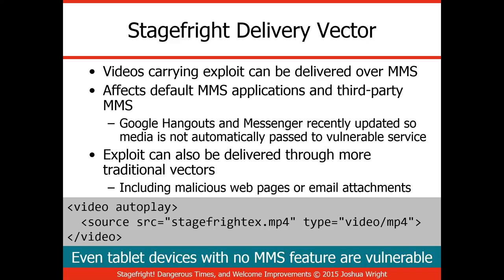Google has released new versions of Hangouts and Google Messenger, updated so they do not process media files automatically. So there is a step between receiving a malicious MP4 file and opening it where an end user with some training can say, 'I'm not going to open this message,' and it won't trigger the vulnerability. That's tremendous — it's not a fix, but it's tremendously good. However, Stage Fright can also be delivered via an HTML5 video autoplay tag, which will start loading a referenced MP4 file automatically when you browse to a site. It is a core library vulnerability, not just an MMS vulnerability.